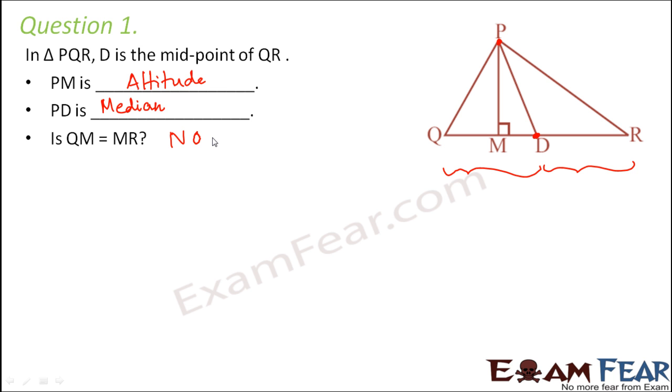Therefore, QM can never be equal to MR because this part is equal to this part. Why? That's because M is the point where the altitude falls on QR, and altitude doesn't bisect the base. It is always the median which connects to the midpoint.